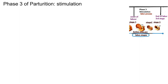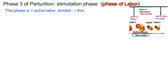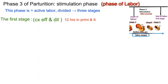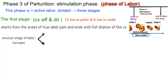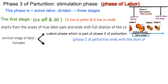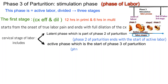Phase 3: Stimulation phase — the phase of labor, synonymous with active labor. It is customarily divided into three stages. The first stage is cervical effacement and dilatation, with average duration of 12 hours in primigravida and 6 hours in multipara. It starts from the onset of true labor pain and ends with full dilation of the cervix. It includes the latent phase (part of phase 2 of parturition) and active phase (start of phase 3 of parturition).